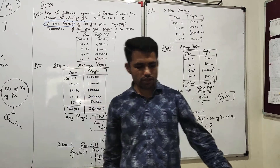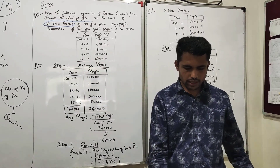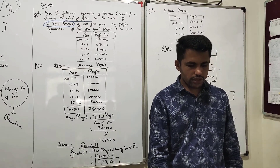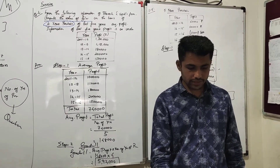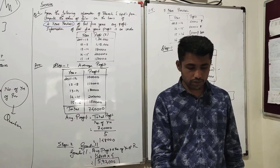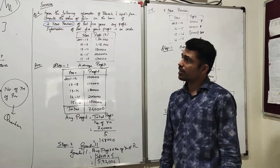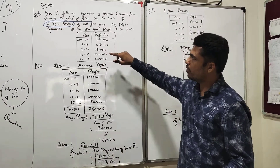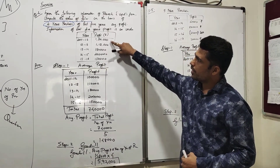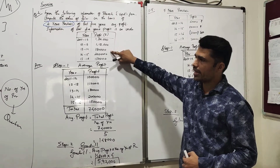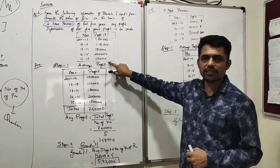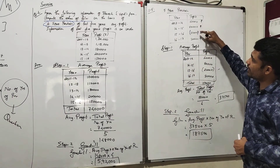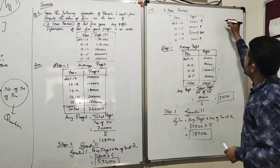These are the two sums that belong to the Simple Average Profit Method. The sums are very easy. As discussed, this method is used when the profit is fluctuating — meaning up and down. In Question Four the profits went one lakh, one lakh ten thousand, one lakh eighty thousand, two lakh, and then suddenly decreased to one lakh fifty thousand. In Question Five: sixty, eighty, then a loss, then profit again.